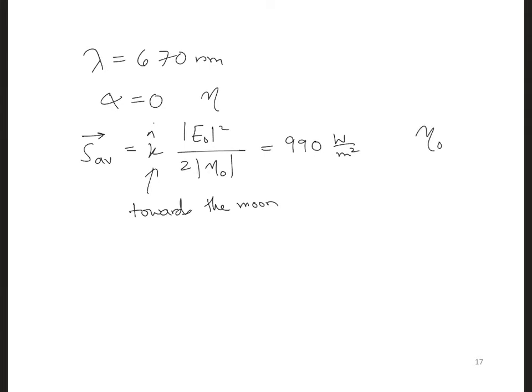So eta not for free space is 377 ohms. And so solving for e naught, we get 864 volts per meter.